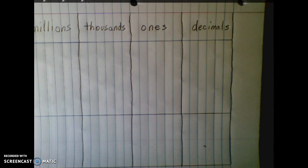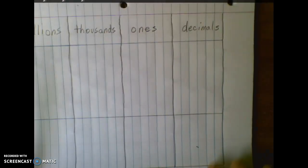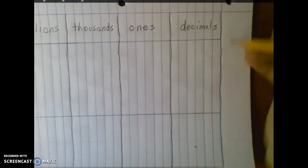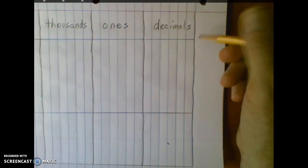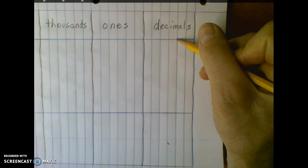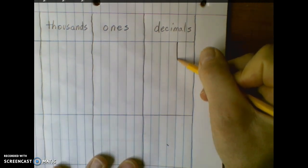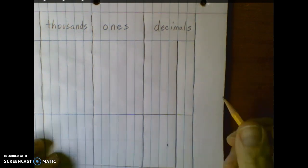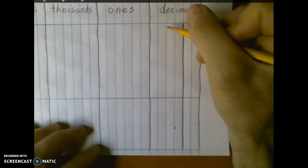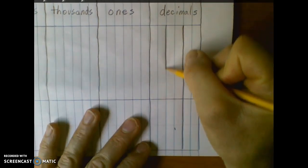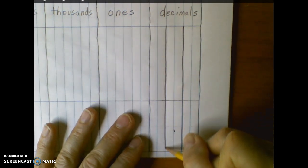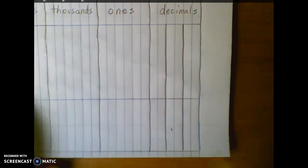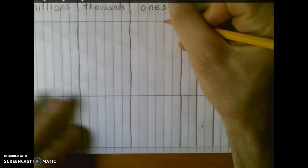Now we're going to break each of these periods into three additional columns. We're going to have two notebook paper lines to make each column. So starting over here at the decimals, we'll count over two and we'll continue the line from below the period title to the bottom of the page. In doing this, we'll have three columns in each period. So continue this pattern all the way across the page.